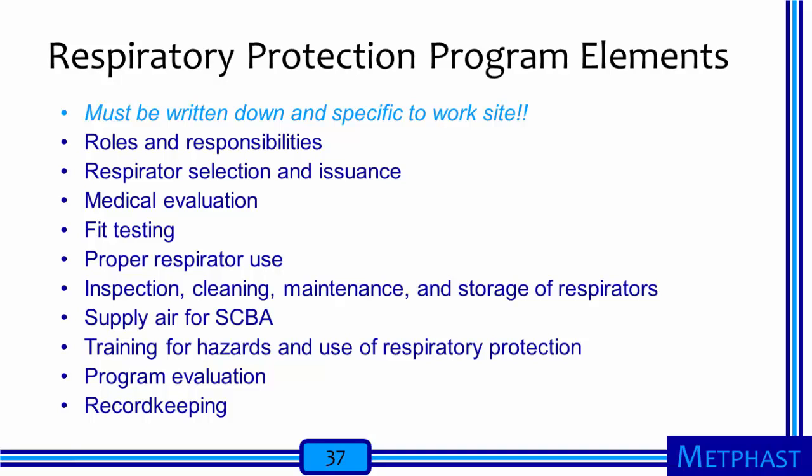OSHA requires a respiratory protection program in workplaces where respirators are worn. The program must be written down and specific to a worksite—not just a general plan. It must describe the roles and responsibilities for the administrator, management, and employees, and indicate how respirators will be selected and issued. The program must have provisions for medical evaluations of workers required to wear respirators, and for testing to ensure that respirators fit the workers who must wear them. It must describe how the organization will ensure proper use, and how workers will inspect, clean, maintain, and store their respirators. If SCBAs are required, the plan must describe how suitable compressed air will be provided. The plan must also address worker training, program evaluation, and record-keeping requirements.